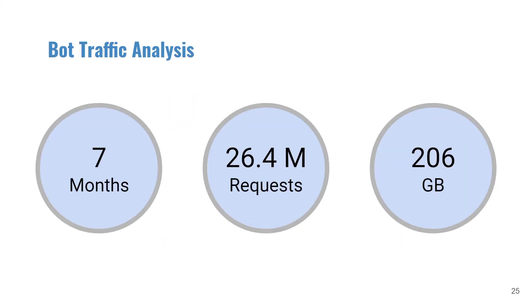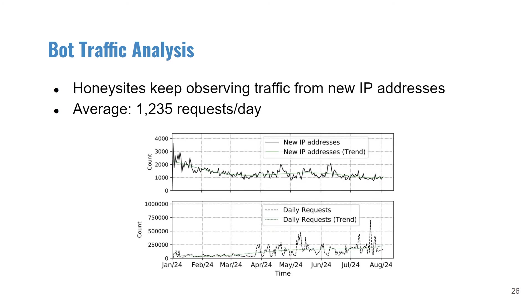Our dataset covers a 7-month period from January 24th to August 24th, 2020. The dataset contains 26.4 million requests from 287,000 unique IP addresses, with over 200 gigabytes of data. We continued to observe new traffic from newly emerged bot IP addresses even after 7 months, and the daily requests gradually increased as more bots discovered our websites.